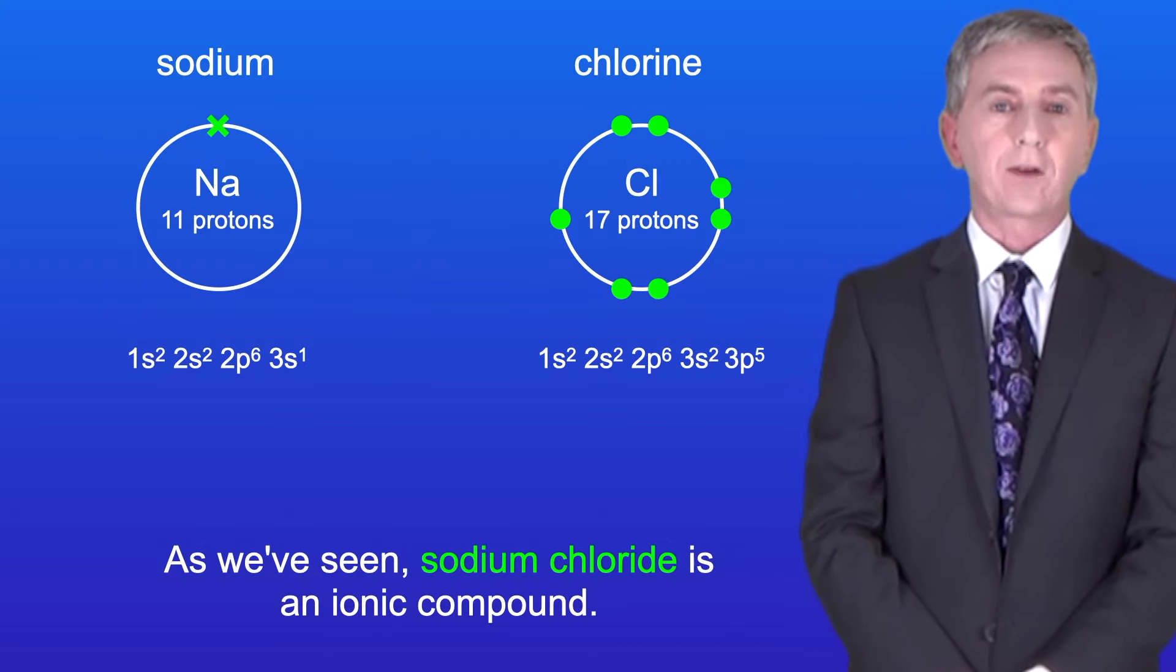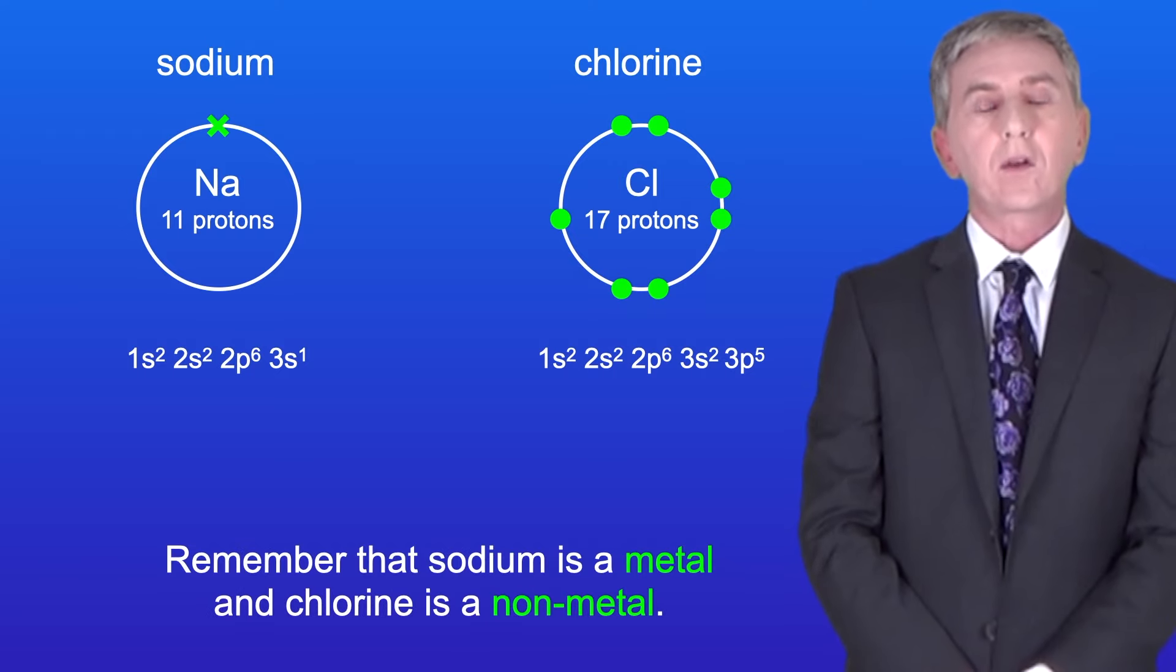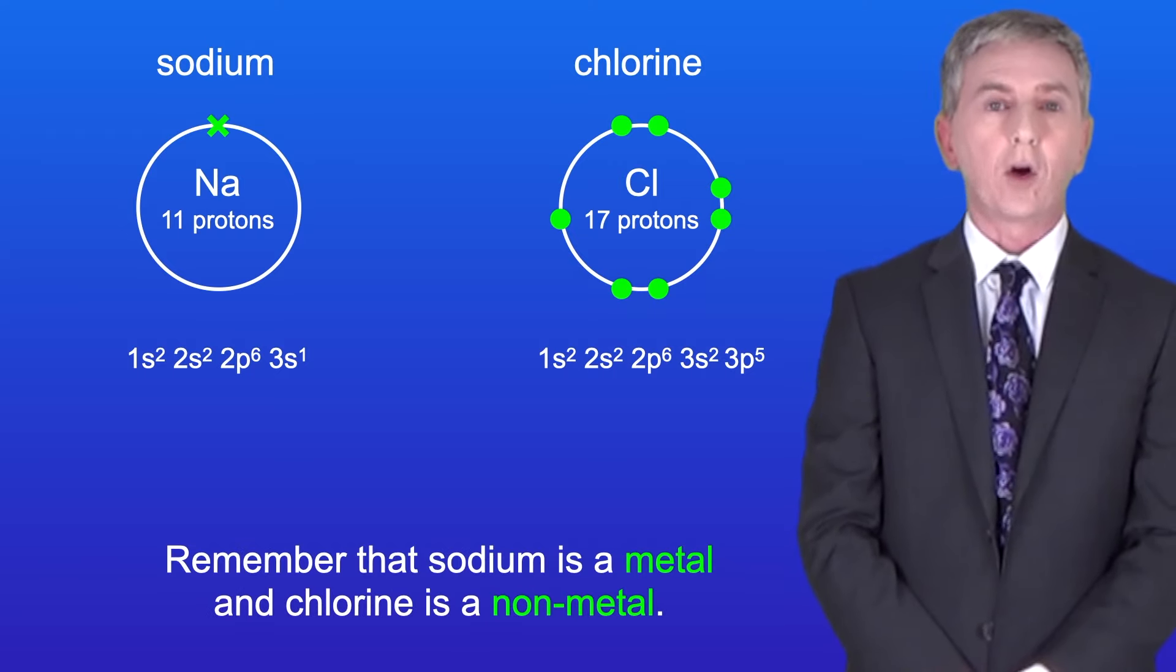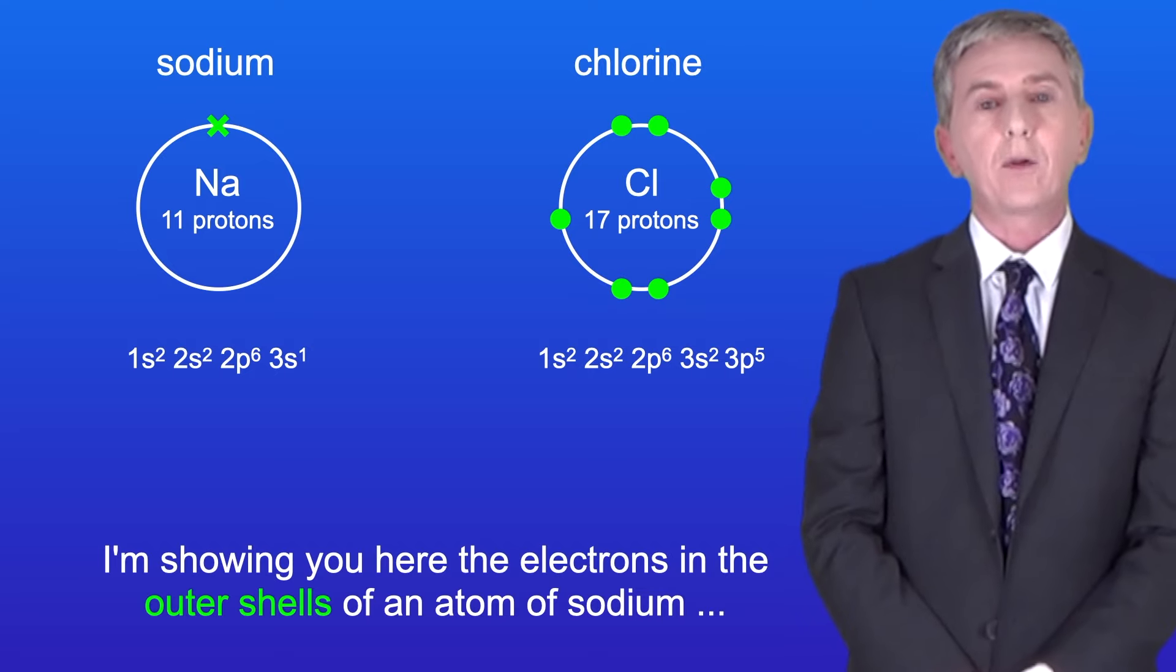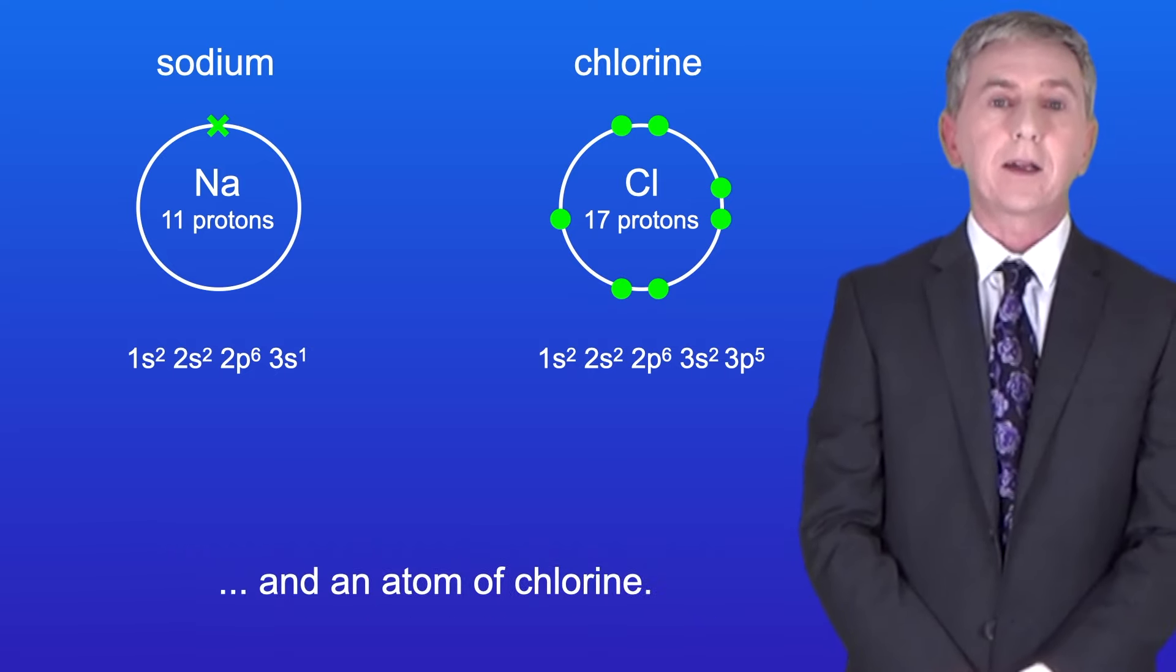As we've seen, sodium chloride is an ionic compound. Remember that sodium is a metal and chlorine is a non-metal. I'm showing you here the electrons in the outer shells of an atom of sodium and an atom of chlorine.